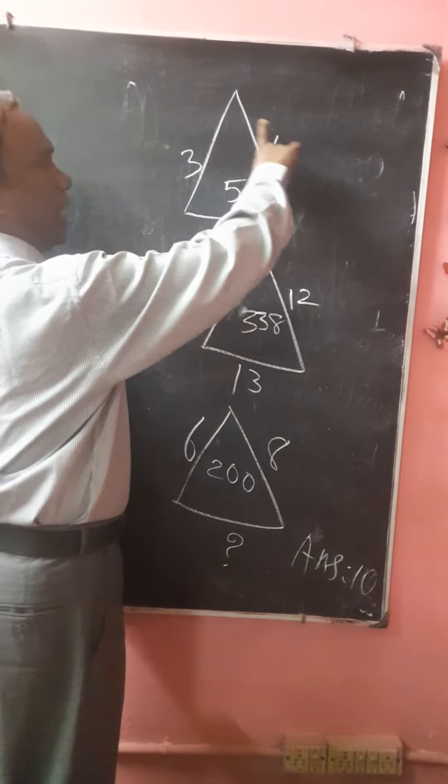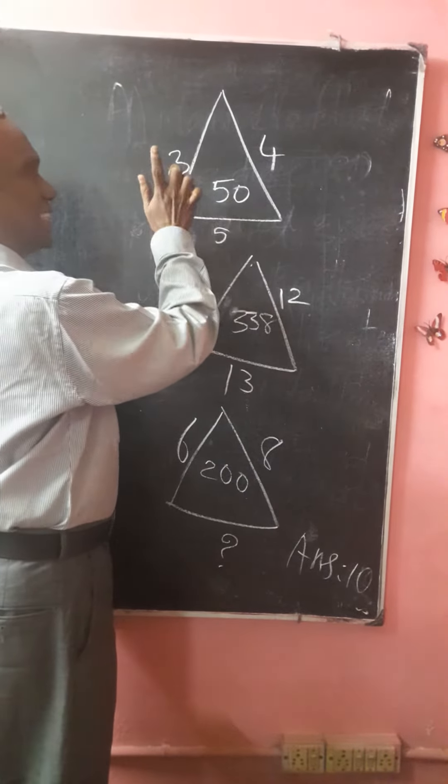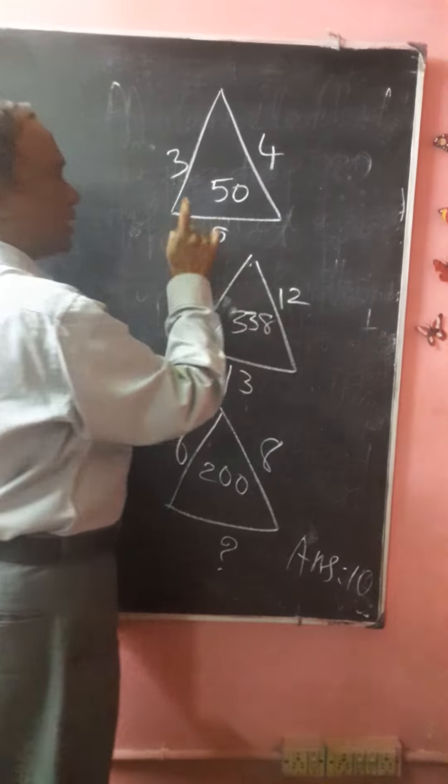Now look here. Here, outside three numbers. In seven number. Square this, nine. Square this, sixteen. Square this, twenty-five.